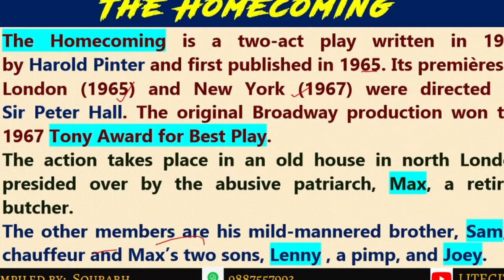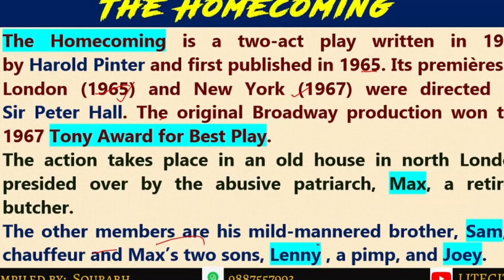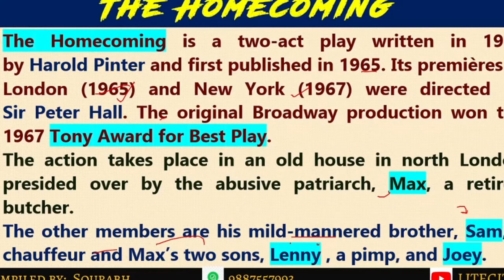The action of this play takes place in an old house in North London. In this house there is an abusive patriarch who holds the complete house under his control — his name is Max. Max is a retired butcher. Other members present in the house are his mild-mannered brother Sam, who is a chauffeur, and his two sons, Lenny and Joey.